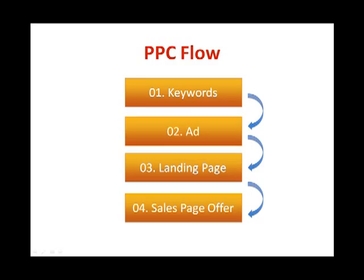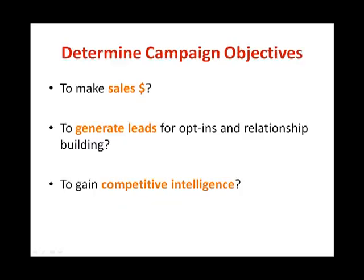Now let's chart out how the PPC campaign flow should be. Find keywords you would like to target and bid for, set up your campaign, add your keywords, categorize your ad group, and write your ad copy. Once your campaign goes live, traffic should be sent to your landing page, and from your landing page send visitors to the sales page offer. Before setting up any PPC campaigns, you need to determine your campaign's objective — whether you're using it to make a sale, generate leads for opt-ins and relationship building, or to gain competitive intelligence.